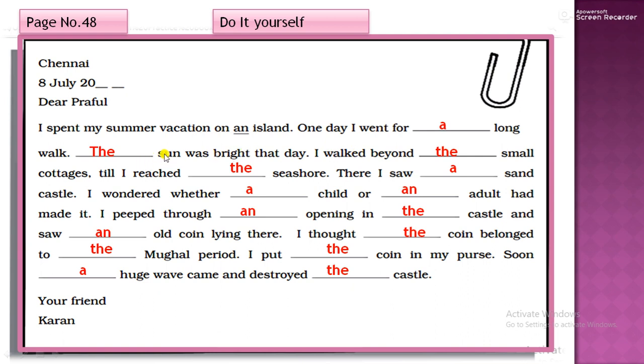The sun. Now, unique thing sun. The sun was bright that day. I walked beyond the small cottages. So the small cottages. Cottages are mentioned. So till I reached the seashore.